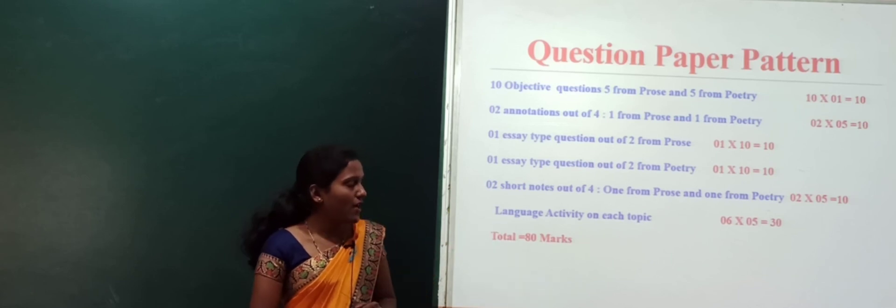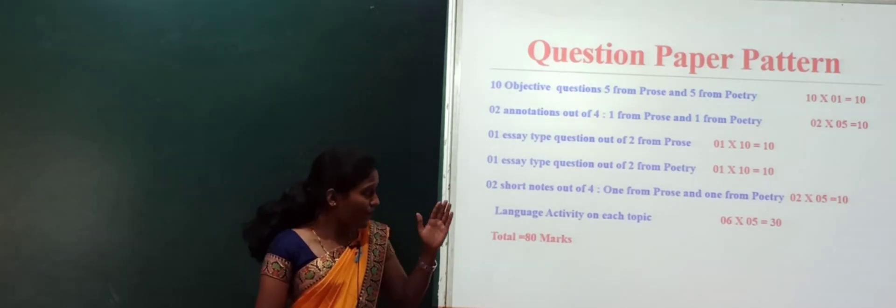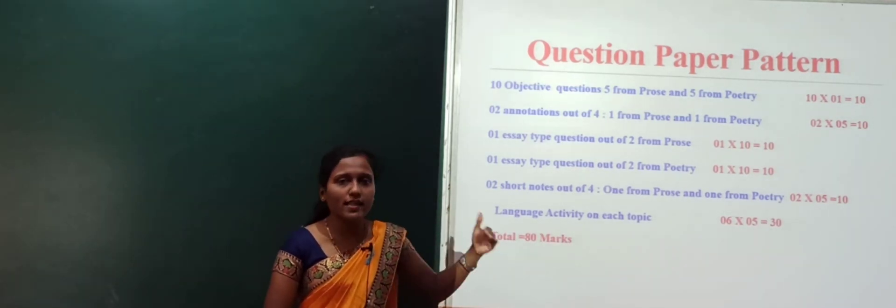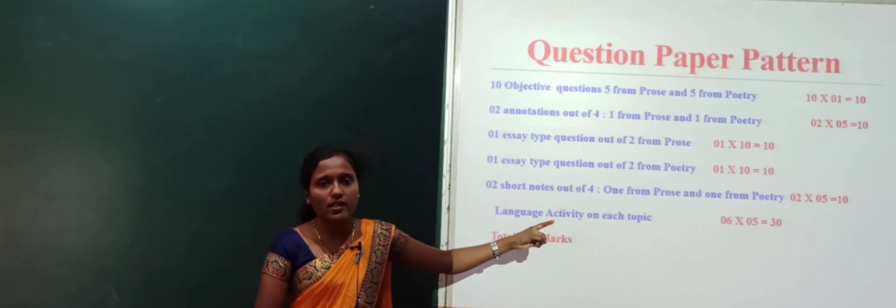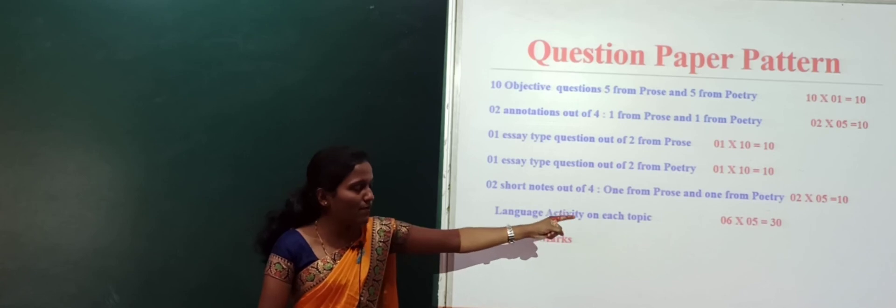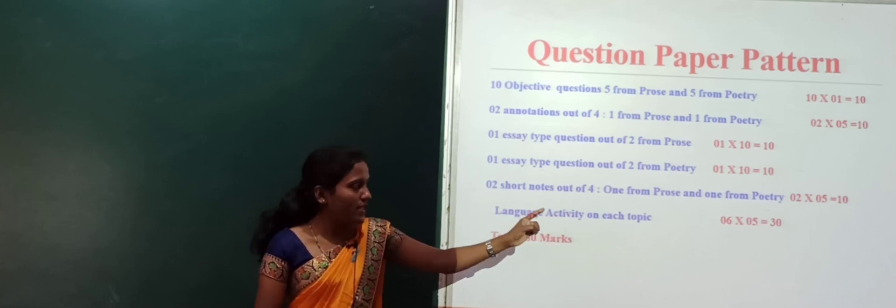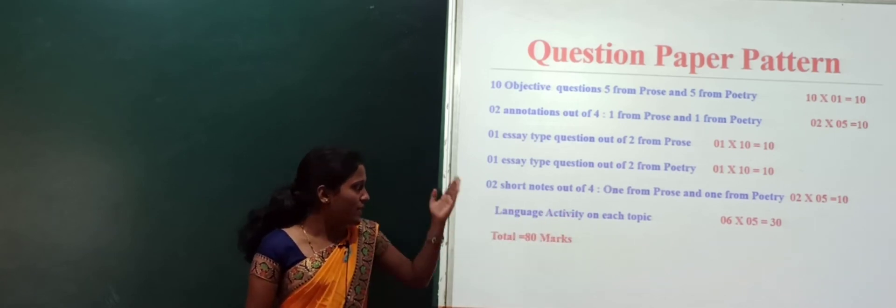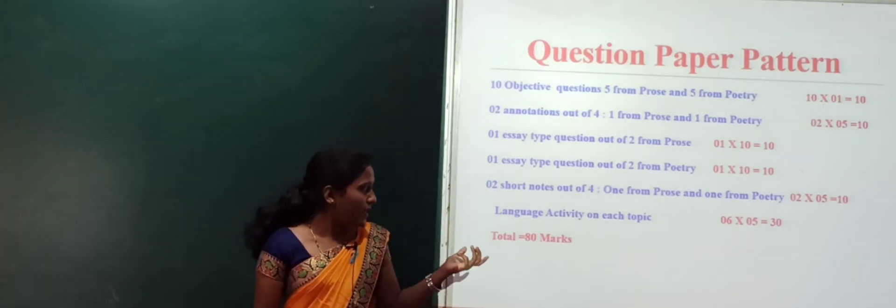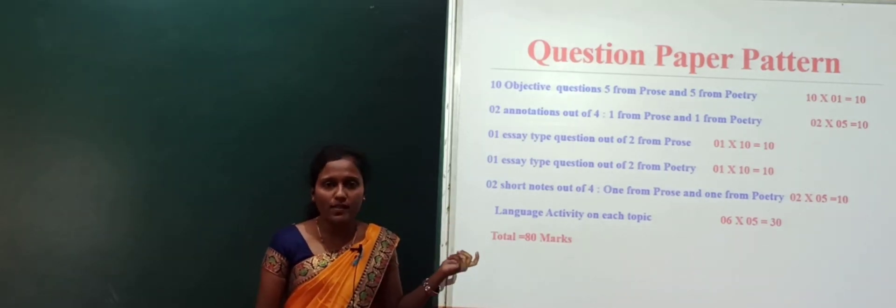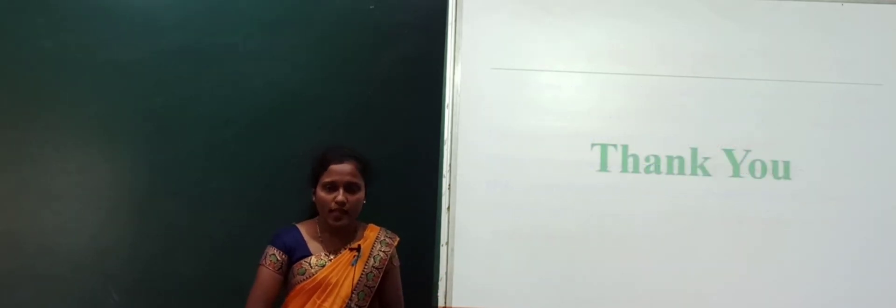Lastly, on the base of grammar or language activity, on each topic they will ask. They will ask six questions here. Those six questions carry five marks each. Totally six into five equals 30. This is all about your theory question paper pattern. Totally it contains 80 marks. Thank you all of you.